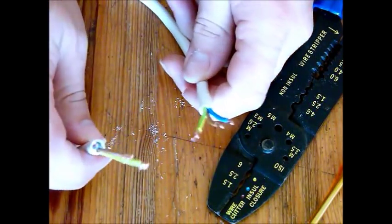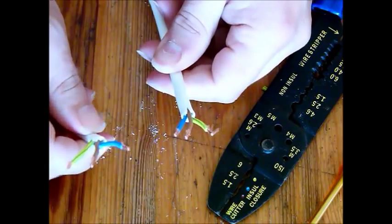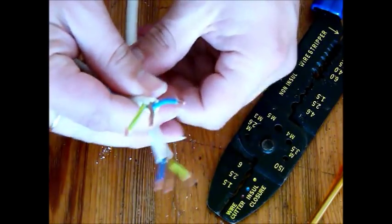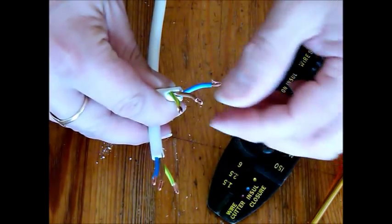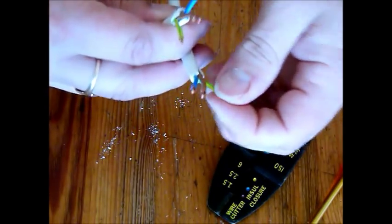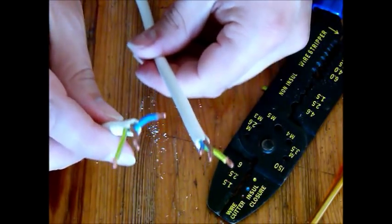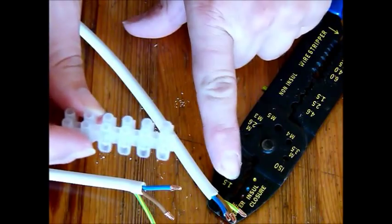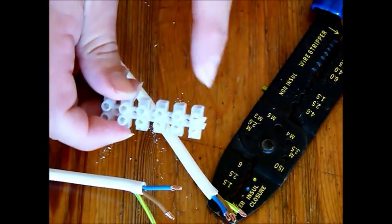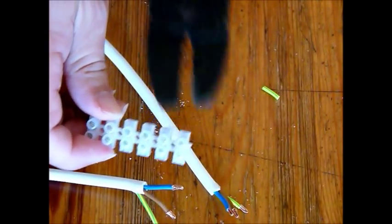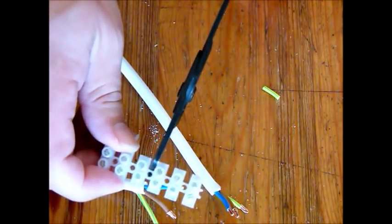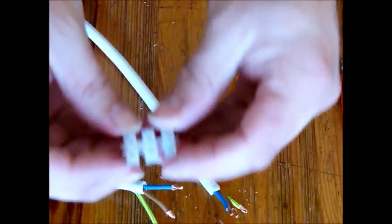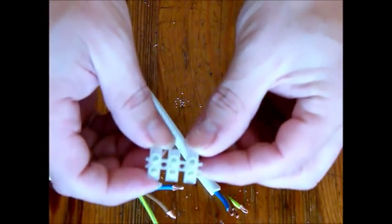So here we are again, back with all our wires stripped. You can see all six of the wires now have nicely presented ends that are ready to go into the connector strip. What we need to do now is cut a piece of this connector strip off. As there are three wires on each, we need three pieces of the connector strip. It cuts very easily, especially if you've got one of these wire cutters. And there you have your three pieces of connector strip.